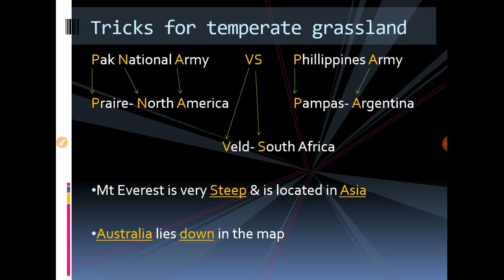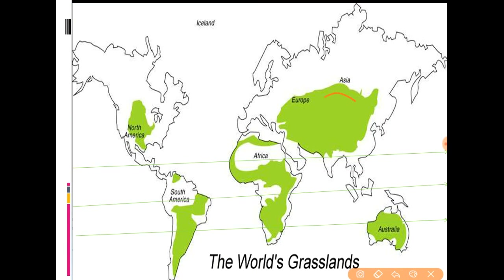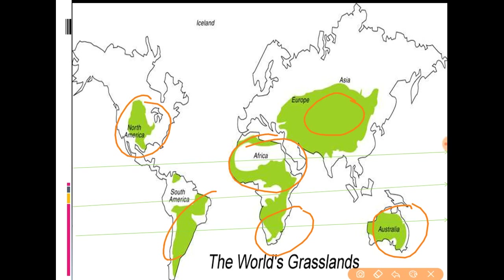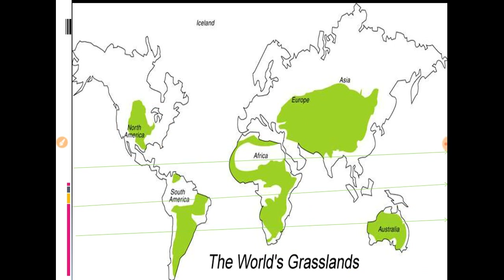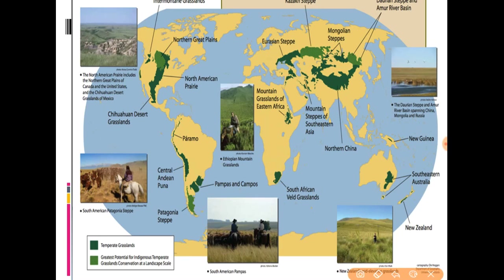Now let's locate the grasslands on a map. We can find Steppe here in the Asian region, Downs in the Australian region, Savannah in Africa, Veld in South Africa, Prairie in North America, and Campos, Pampas, and Llanos in South America. On a second map it becomes even clearer: Steppe in Asia, Downs in Australia, Savannah and Veld in Africa, Pampas and Llanos in South America, and Prairie in North America.